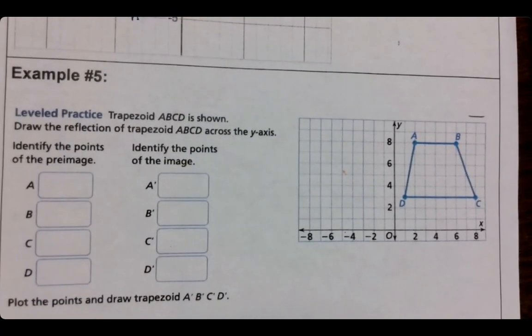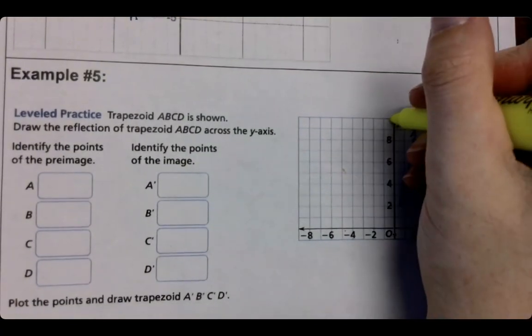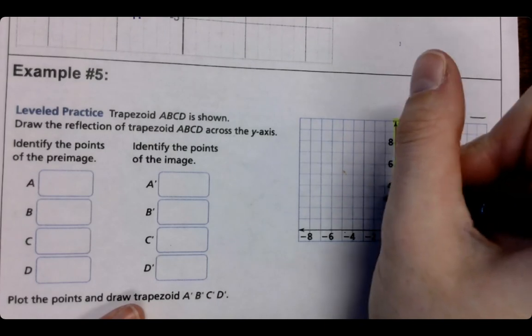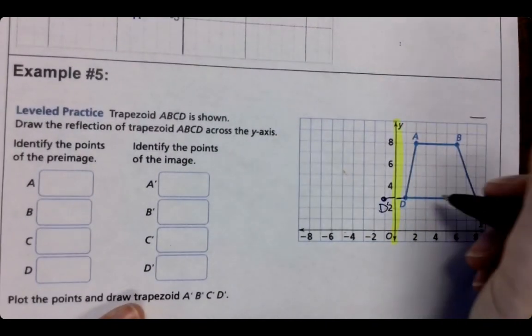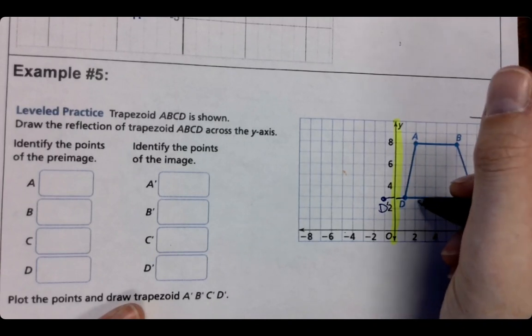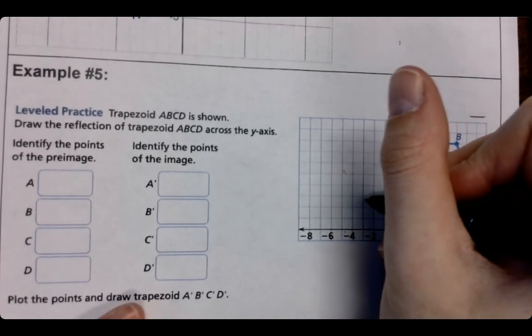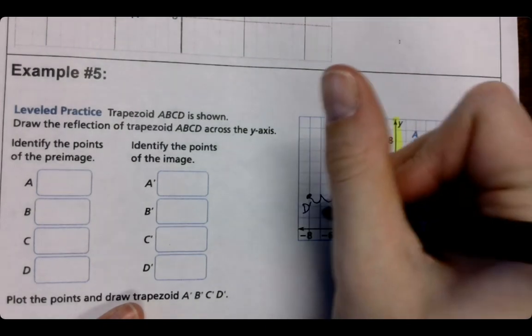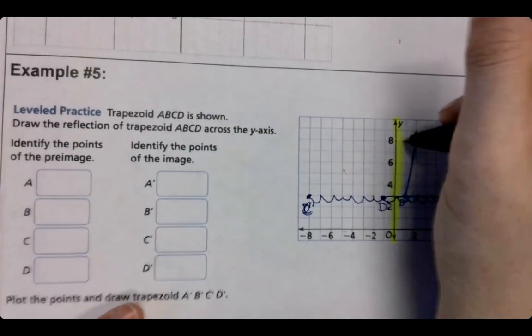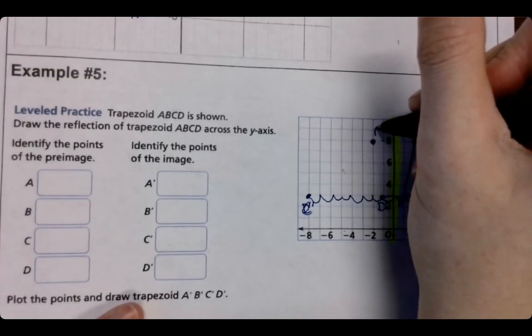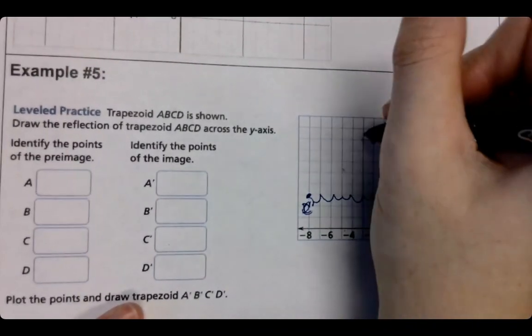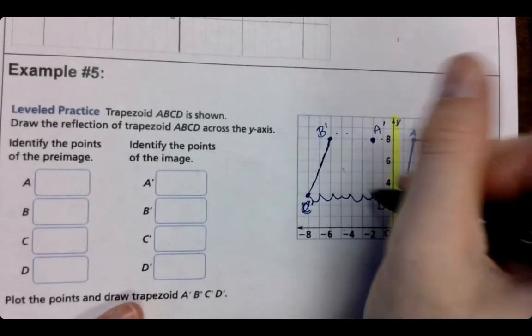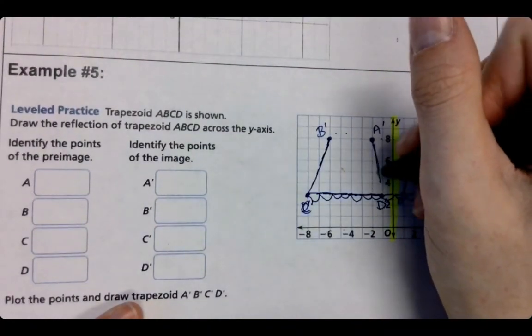Welcome back. So the y-axis is this one right here. So we should have had D is one away. So one away on this side, that would be D prime. C is eight, one, eight. Oh, let's see. I'm so sorry. Okay.